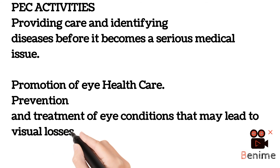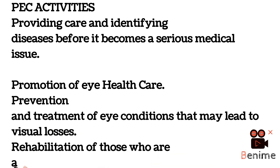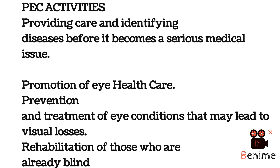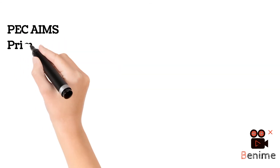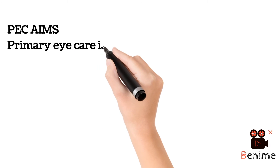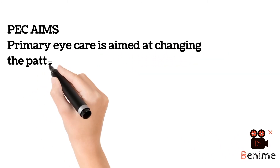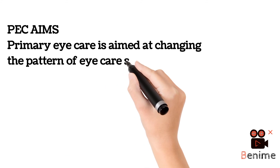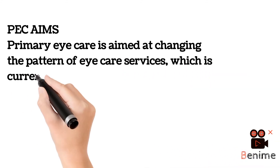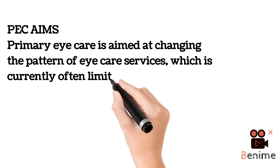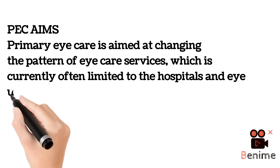What are the aims of primary eye care? Why do you study primary eye care? First, is to change the pattern of eye care services, currently often limited to hospitals, so that you can extend those services to health centers. Secondly, is to limit the rate of preventable blindness.